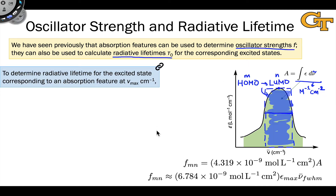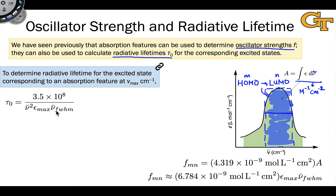To determine the radiative lifetime, we make use of the frequency or wavenumber of the transition, the molar absorption coefficient, and the full width at half maximum — the width of the peak at half of the maximum absorption coefficient.